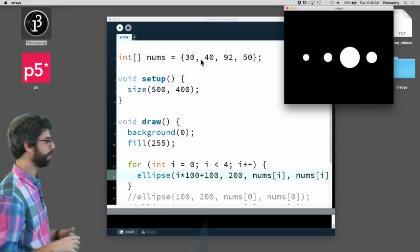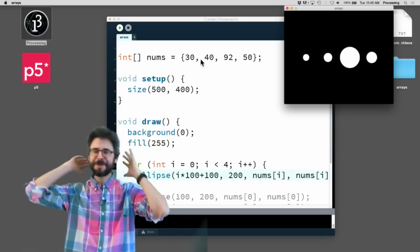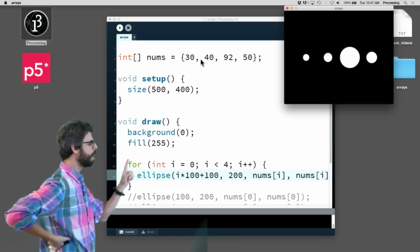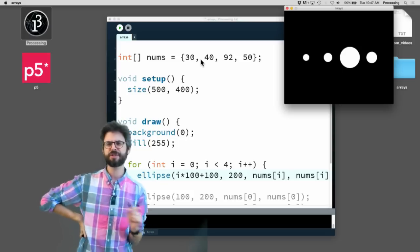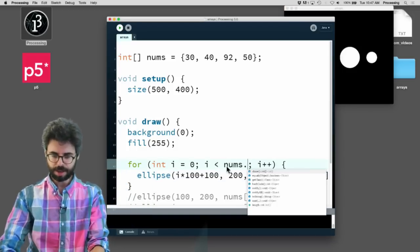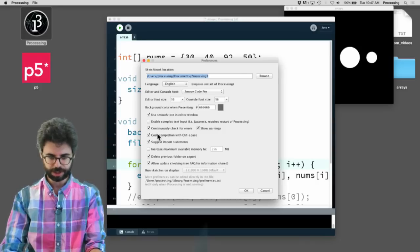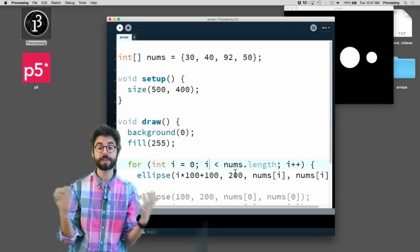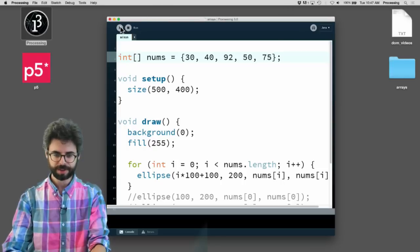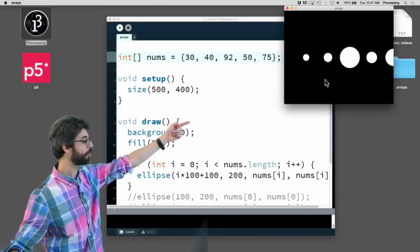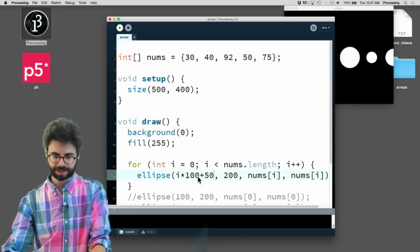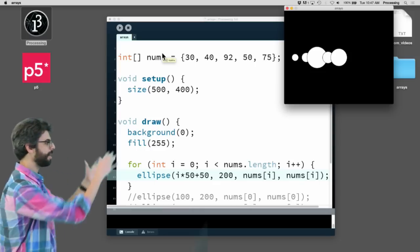One thing I should mention: I don't love that I have the number 4 there. This is a hard-coded value. What if I were to add more values to the array? I still would only loop through four of them. So one thing you could do with an array is nums.length. Nums.length dynamically resolves the length of the array. So if I were to add another one, 75, you can see I've added an extra value, which got me an extra circle. Now it's looping through the entire array. It's always using the length. I could space them out a little bit less, like by 50.